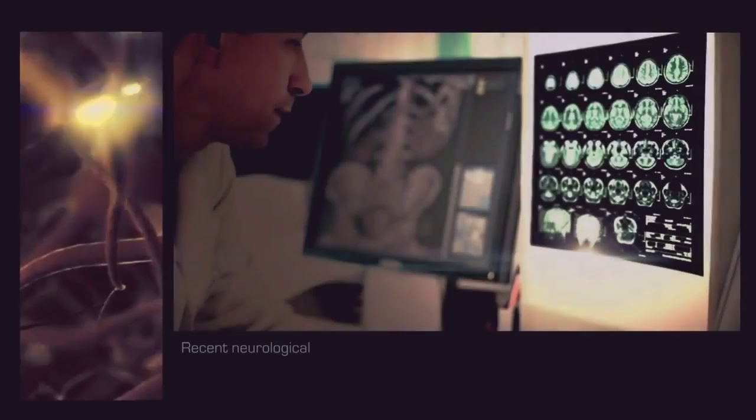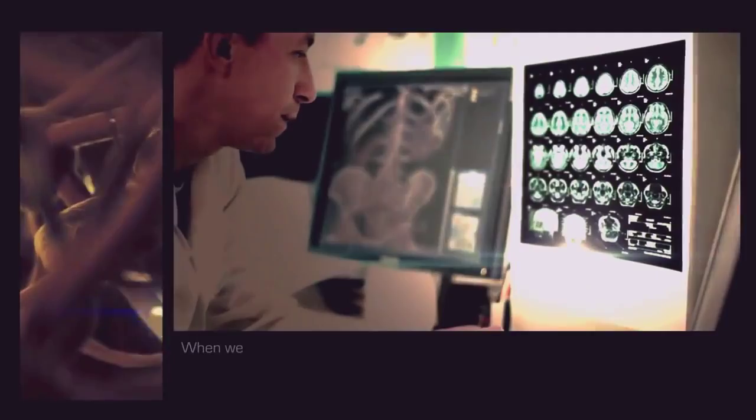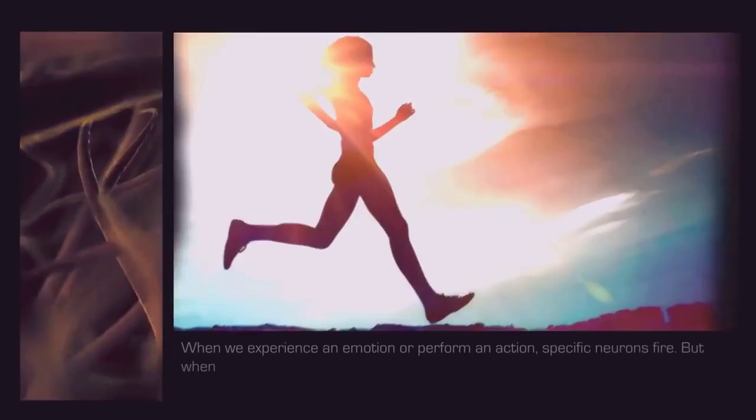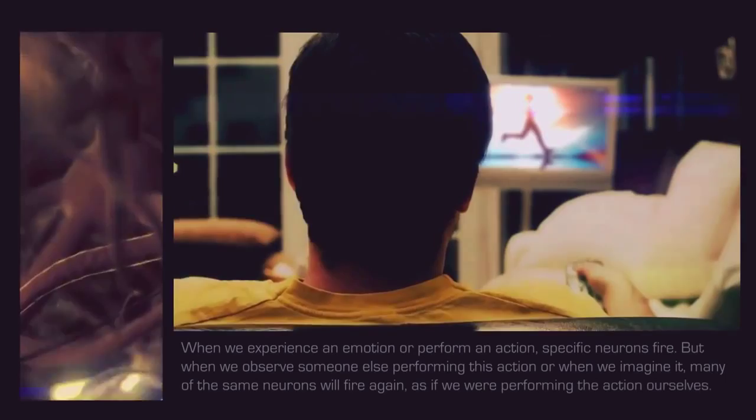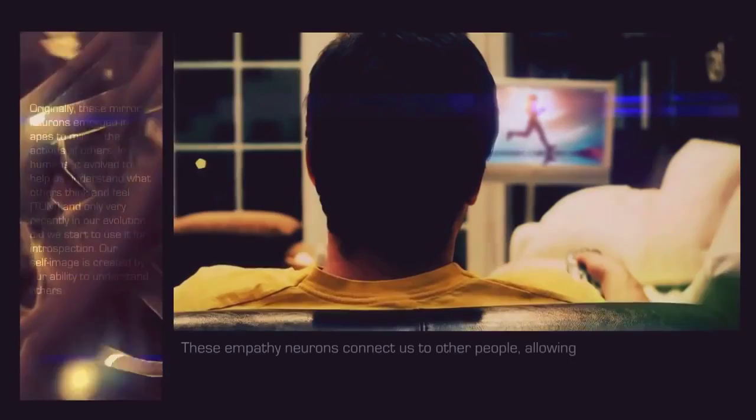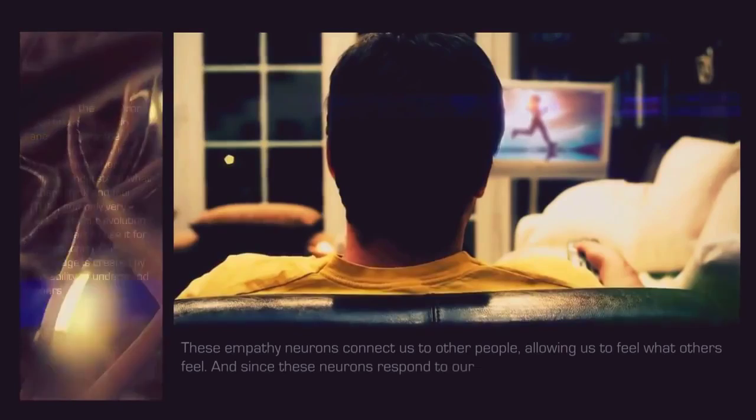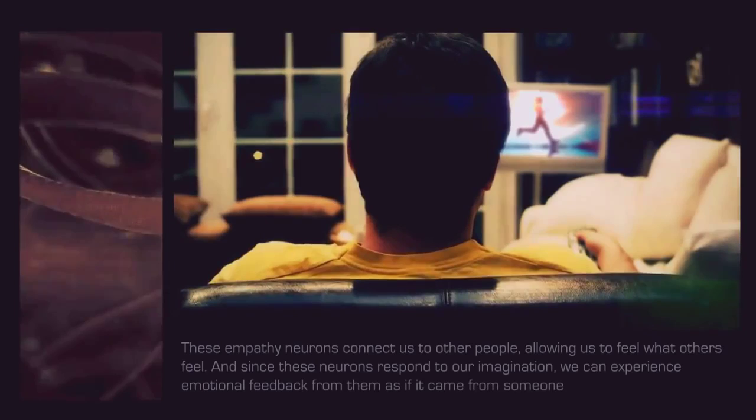Recent neurological research has confirmed the existence of empathetic mirror neurons. When we experience an emotion or perform an action, specific neurons fire, but when we observe someone else performing this action or when we imagine it, many of the same neurons will fire again, as if we were performing the action ourselves. These empathy neurons connect us to other people, allowing us to feel what others feel. And since these neurons respond to our imagination, we can experience emotional feedback from them as if it came from someone else. This system is what allows us to self-reflect.